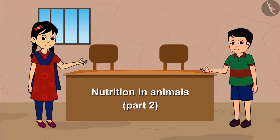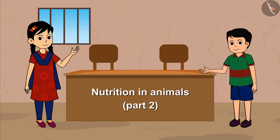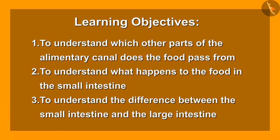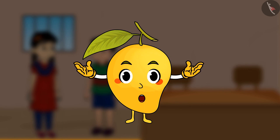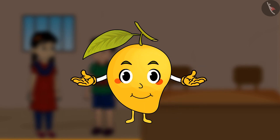Nutrition in Animals, Part 2. Learning objectives: 1) To understand which other parts of the alimentary canal the food passes through. 2) To understand what happens to the food in the small intestine. 3) To understand the difference between the small intestine and the large intestine.